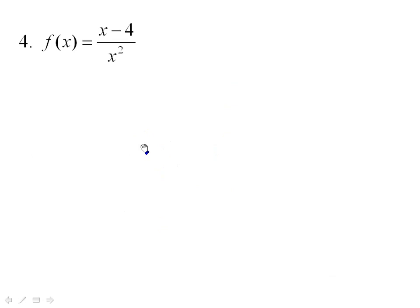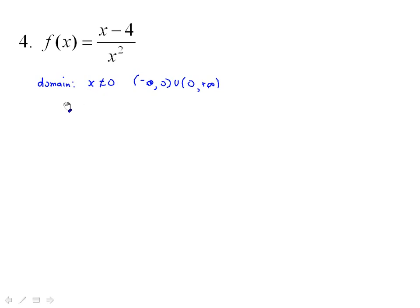Now let's look at the second function. The domain is everything except zero, so in interval notation: (-∞, 0) ∪ (0, +∞). Since x cannot equal zero in the denominator, there is no y-intercept — setting x = 0 gives division by zero.